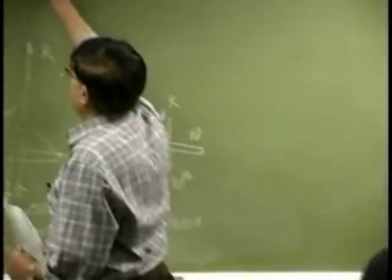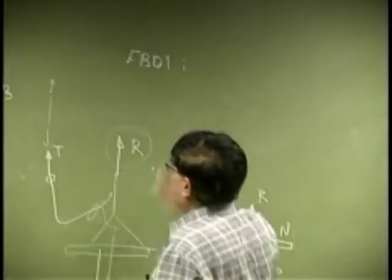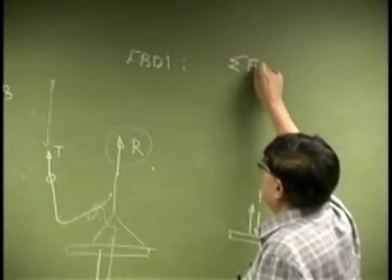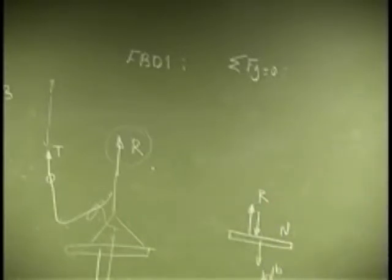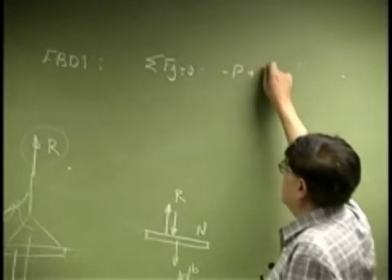OK, so the first set of equations will be for free body diagram 1. You sum all your forces in the y direction; that should go to 0.